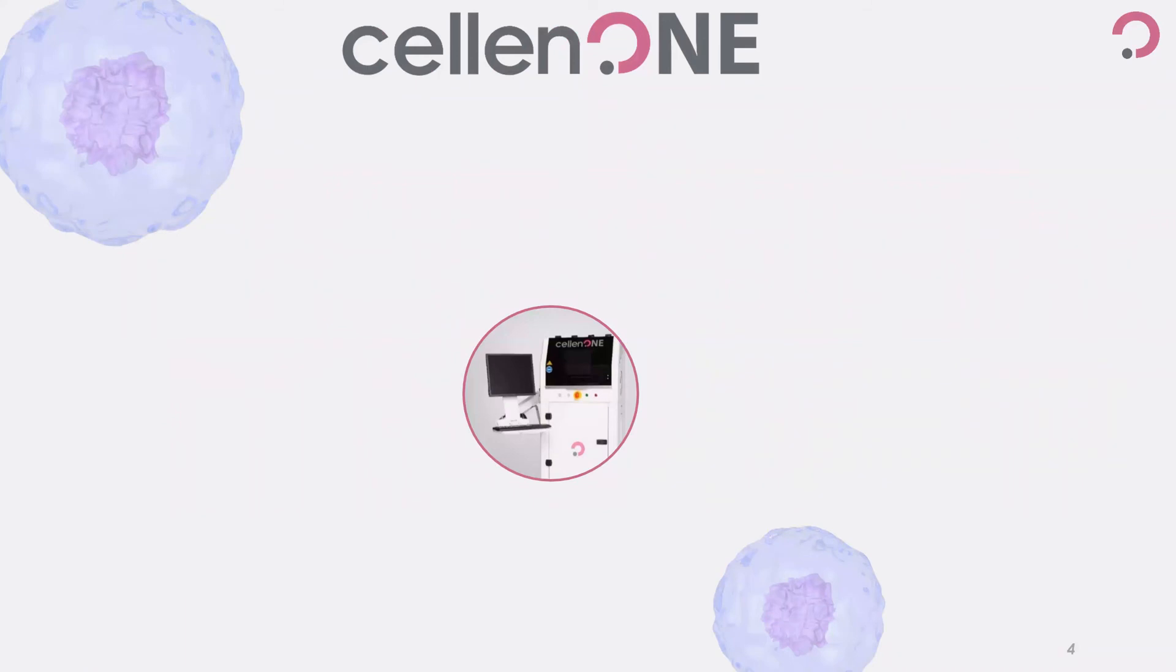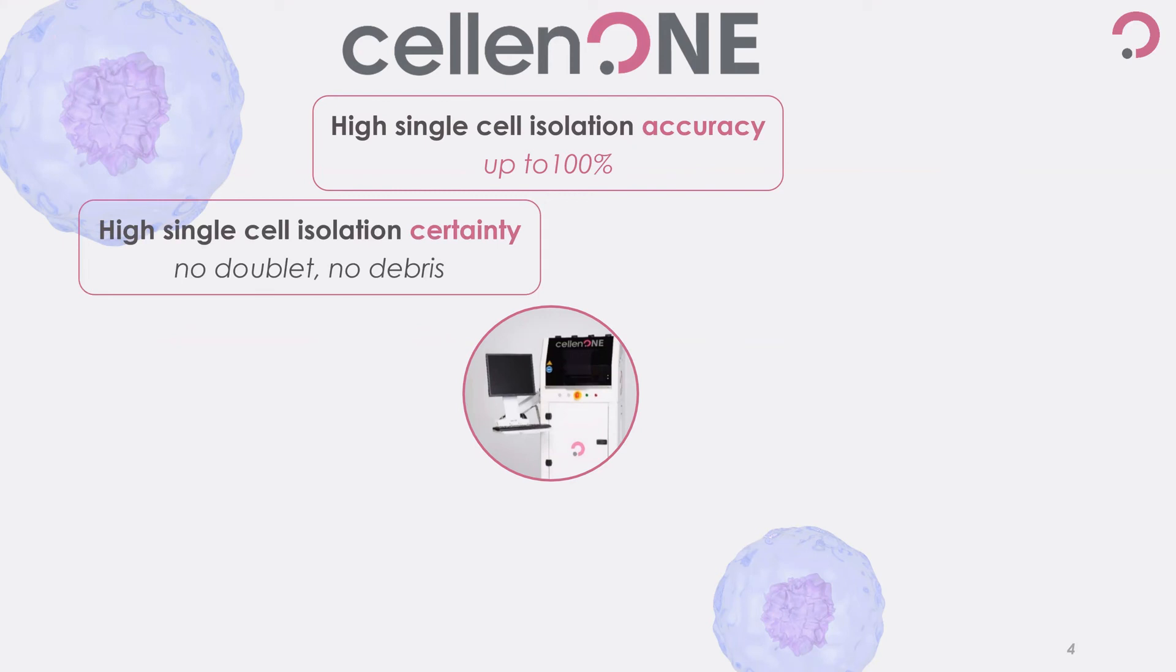In conclusion, the cell-in-1 is a highly accurate single cell isolation tool capable of avoiding isolation of doublets and debris and gentle enough for post-cell isolation cell growth of even the most delicate cells.